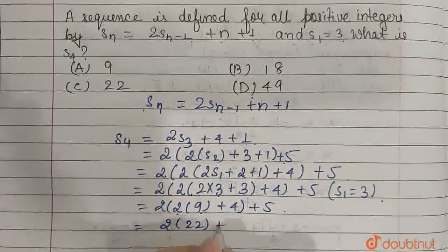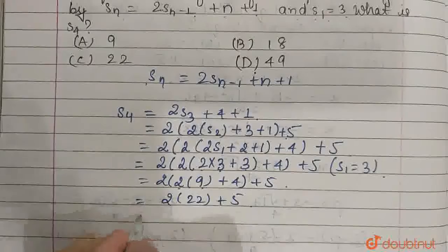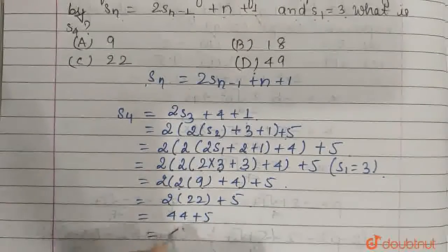2 multiplied by 22 plus 5. So this will be equal to 44 plus 5, which is equal to 49.